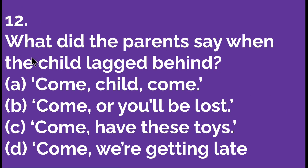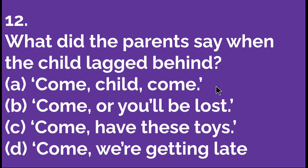What did the parents say when the child lagged behind? Option A: 'Come child come.' Option B: 'Come or you will be lost.' Option C: 'Have these toys.' Option D: 'Come, we are getting late.' The first is the right option — 'Come child come.' So A is the right answer. Let's move to the next question.